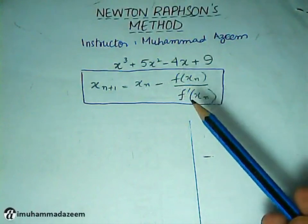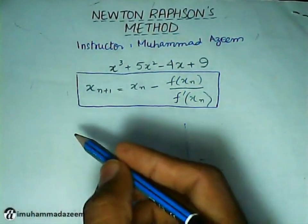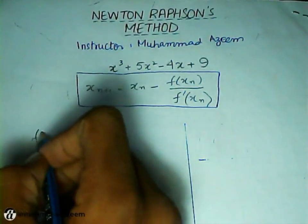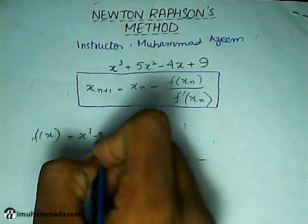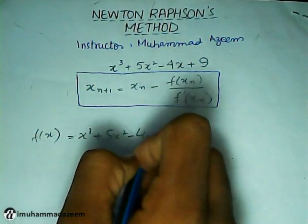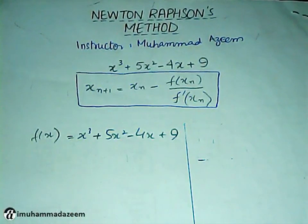So f(x) is going to be equal to x³ + 5x² - 4x + 9. Similarly, the f prime of x is going to be 3x² + 10x - 4.